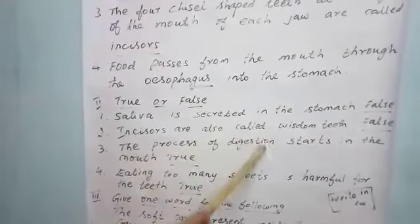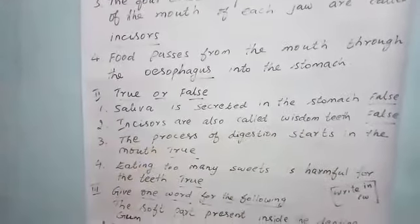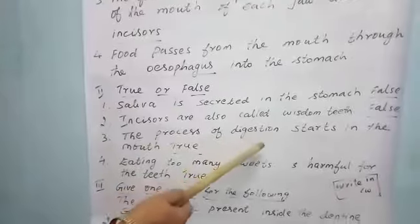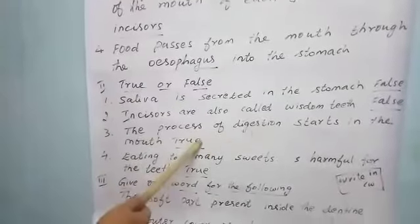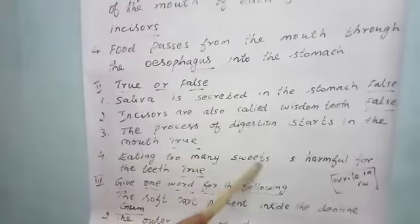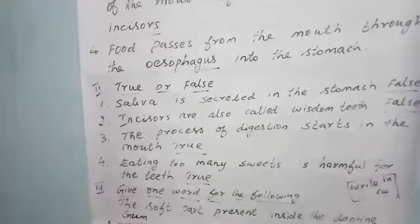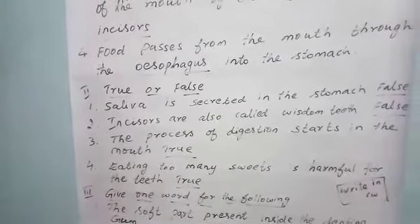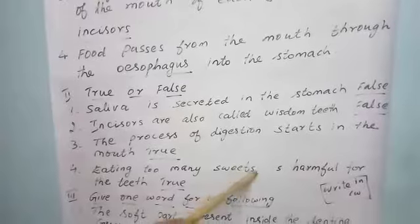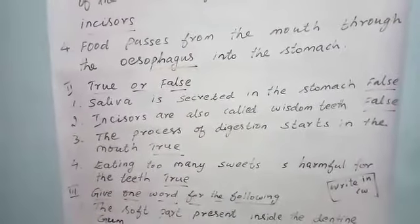The process of digestion starts in the mouth. The food enters into the mouth, isn't it? So it is a true statement. Eating too many sweets is harmful to the teeth — if you eat so many chocolates, it will be harmful to your teeth. True.